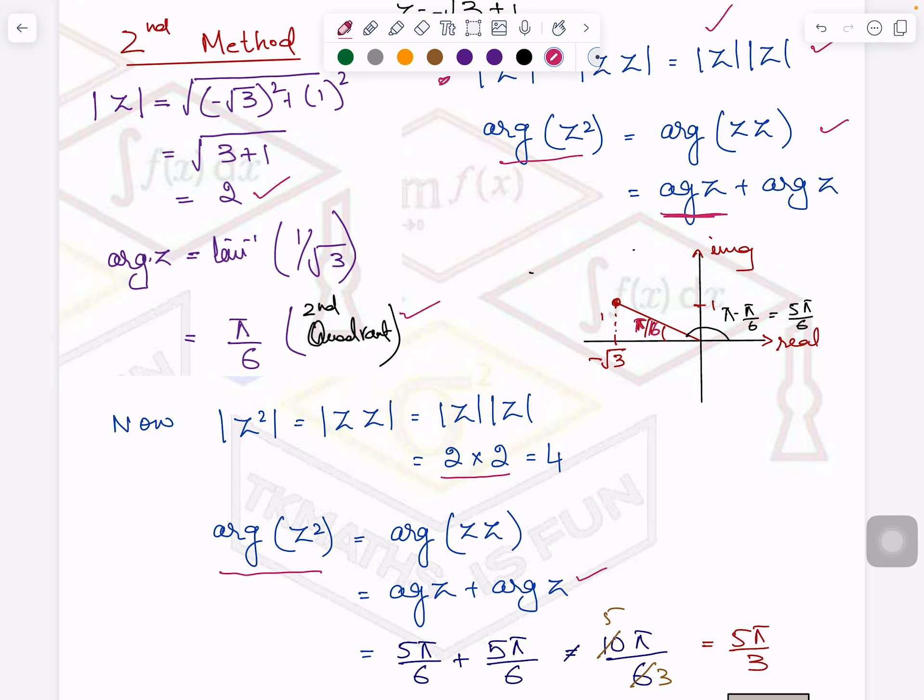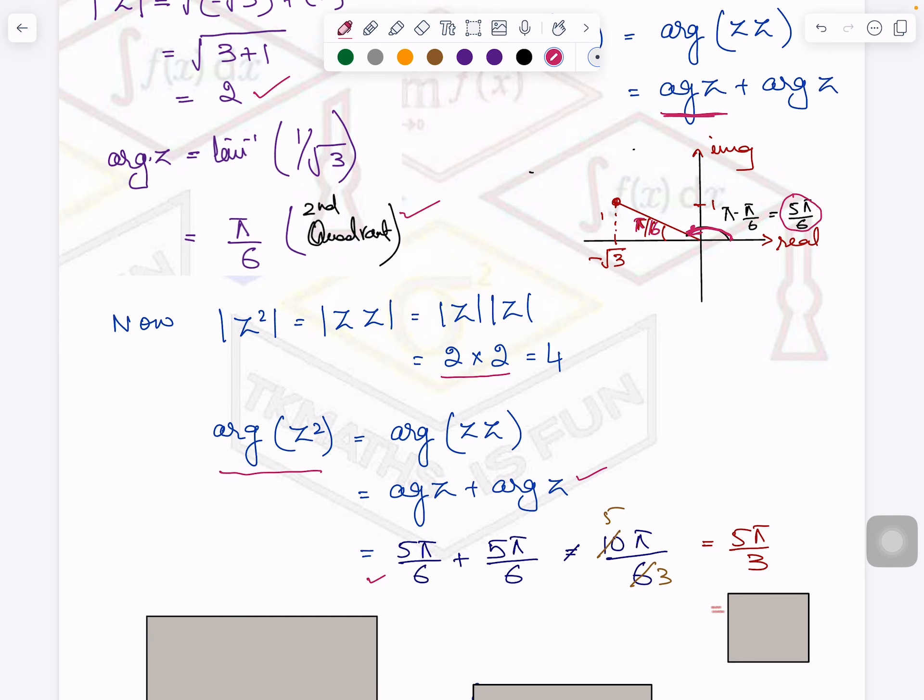π/6 is your this answer. So your actual answer of theta is here. π/6 is not your answer. Your answer is this part, which is π minus π/6, which equals 5π/6. So your argument of Z is 5π/6. And when you will add with it again, so it will become 5π/3.